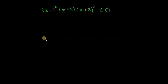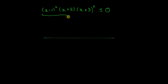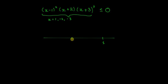First draw your number line — it keeps the work clean. This expression equals 0 when x equals 1, minus 2, and minus 3. Plot these in ascending order: minus 3, minus 2, and 1.